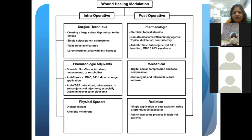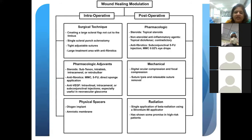Pre-operatively, one needs to ensure a healthy ocular surface. In patients on long-term anti-glaucoma drugs, there is an altered ocular surface milieu. Those on long-term topical carbonic anhydrase inhibitors and brimonidine can have chronic follicular conjunctivitis and inflamed conjunctiva, which can lead to bleb failure. In patients with conspicuous ocular surface inflammation, we could withhold topical anti-glaucoma drugs for a couple of weeks before trabeculectomy and replace with systemic acetazolamide, or give topical steroids — all at the discretion of the surgeon.